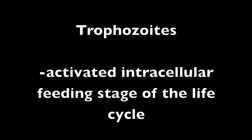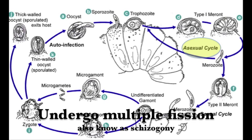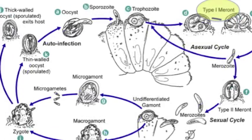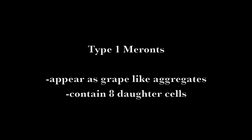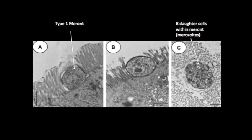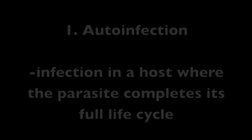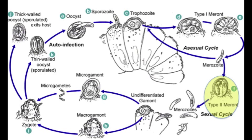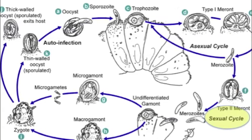Trophozoites are the activated intracellular feeding stage of the life cycle of Cryptosporidium parvum. Trophozoites undergo asexual reproduction by multiple fission or schizogony and develop into type 1 meronts. Type 1 meronts appear as grape-like aggregates and contain eight daughter cells. Once released, some type 1 merozoites cause auto-infection in neighboring host cells and others become type 2 meronts, which have a rosette-like pattern and contain four type 2 merozoites. Upon bursting of the host epithelial cell, these attach to adjacent epithelial cells in the small intestine.